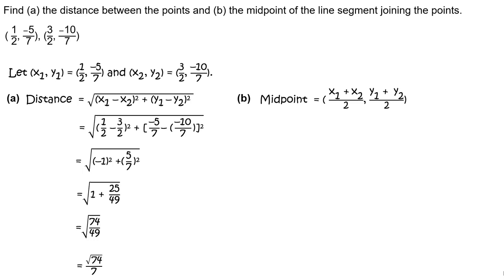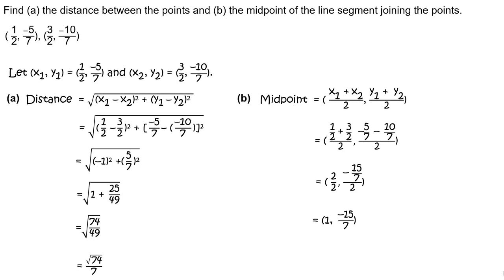Part b. Write the formula for the midpoint of the line segment joining two points: midpoint equals the quantity x sub 1 plus x sub 2 divided by 2, the quantity y sub 1 plus y sub 2 divided by 2. Substitute 1 half for x sub 1, 3 halves for x sub 2, negative 5 sevenths for y sub 1, negative 10 sevenths for y sub 2. Simplify to get 2 halves, negative 15 sevenths divided by 2, then simplify further to get 1, negative 15 sevenths.